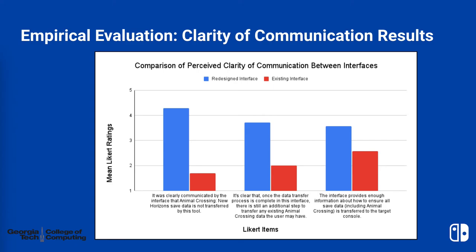There were some significant differences in how participants rated the clarity of communication of interfaces. Participants assigned to the redesigned interface were more likely to agree that the interface clearly communicated the limitation that the tool did not transfer Animal Crossing save data.